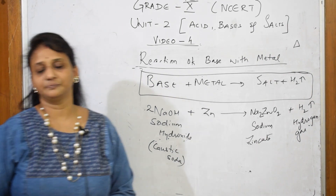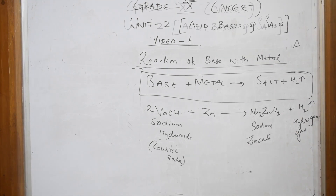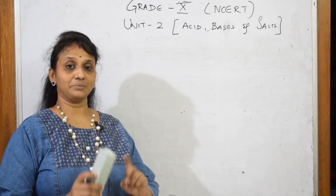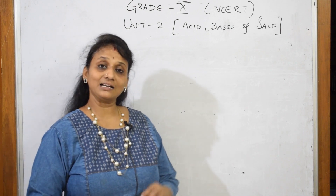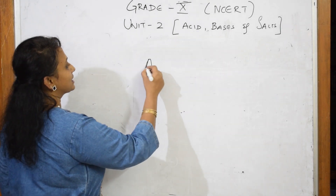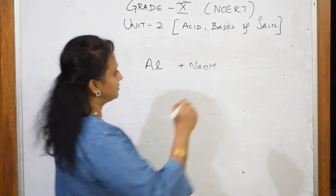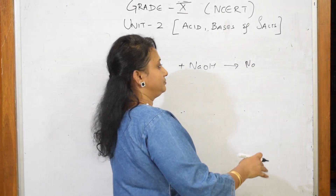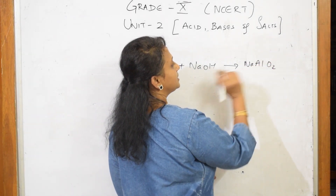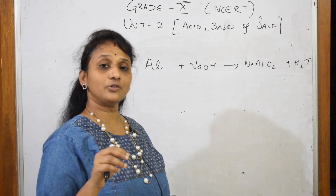In the reaction of a base with a metal, they will ask you which metal is highly preferred to react with the base. Remember, aluminium is a metal that reacts with sodium hydroxide, forming sodium aluminate plus hydrogen gas.